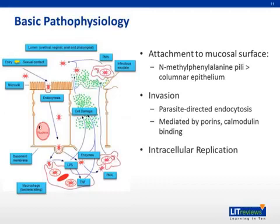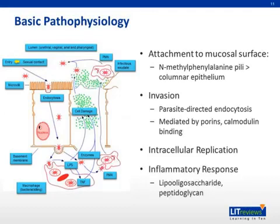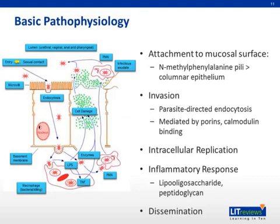Following intracellular replication, there is an inflammatory response involving the complement cascade, TNF-alpha, and subsequently a neutrophilic infiltration, which creates the purulent discharge characteristic of clinical gonorrhea infection. In some individuals, there also occurs a disseminated form of gonococcal infection, which we will discuss later in this talk.